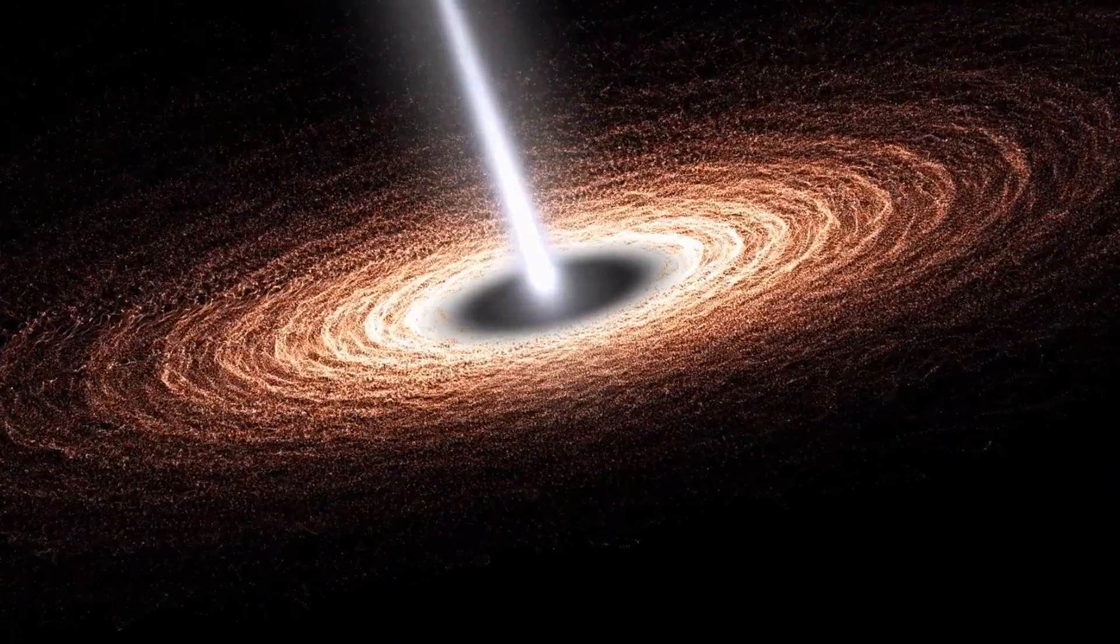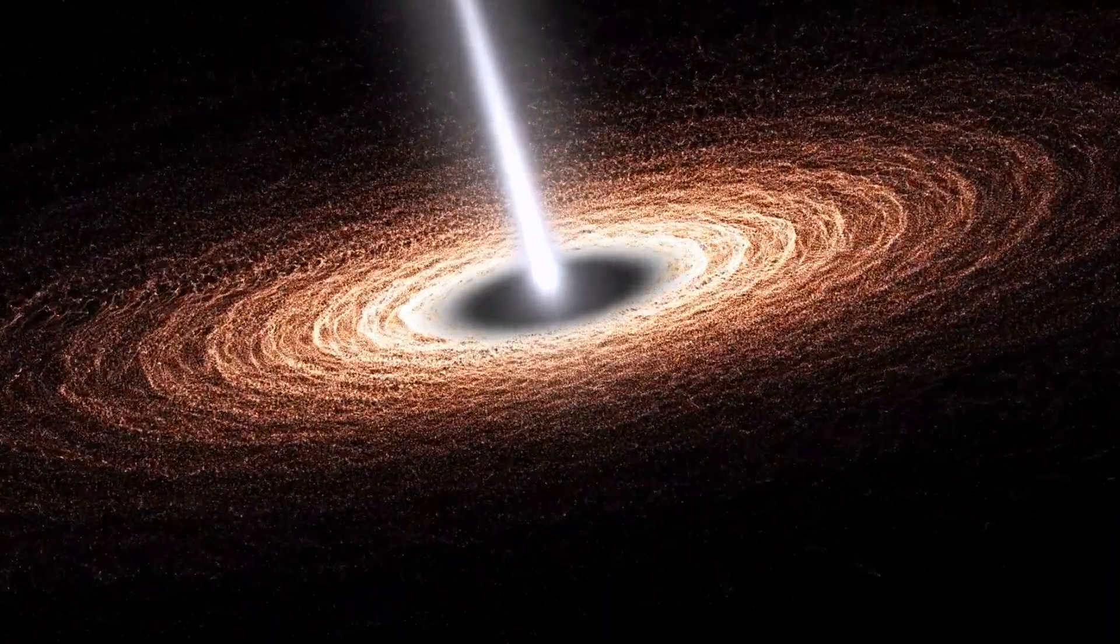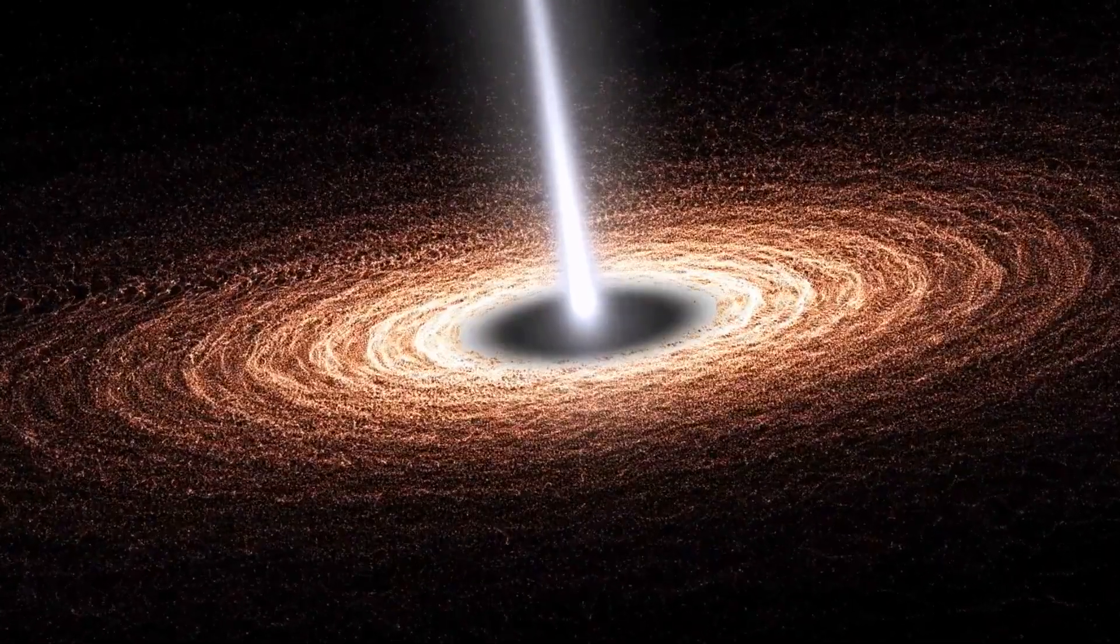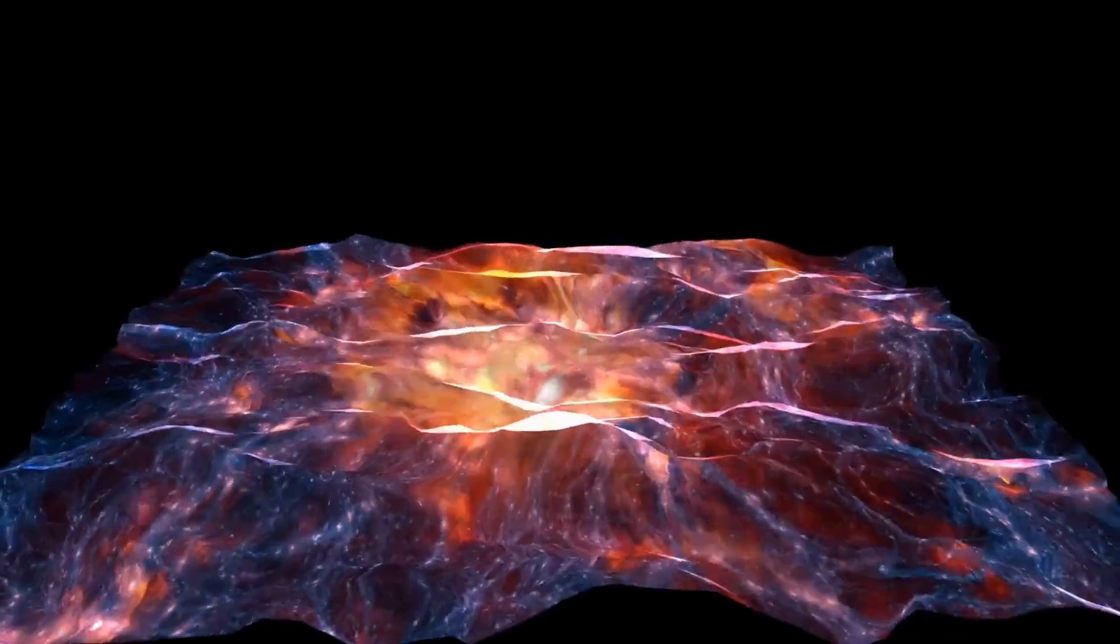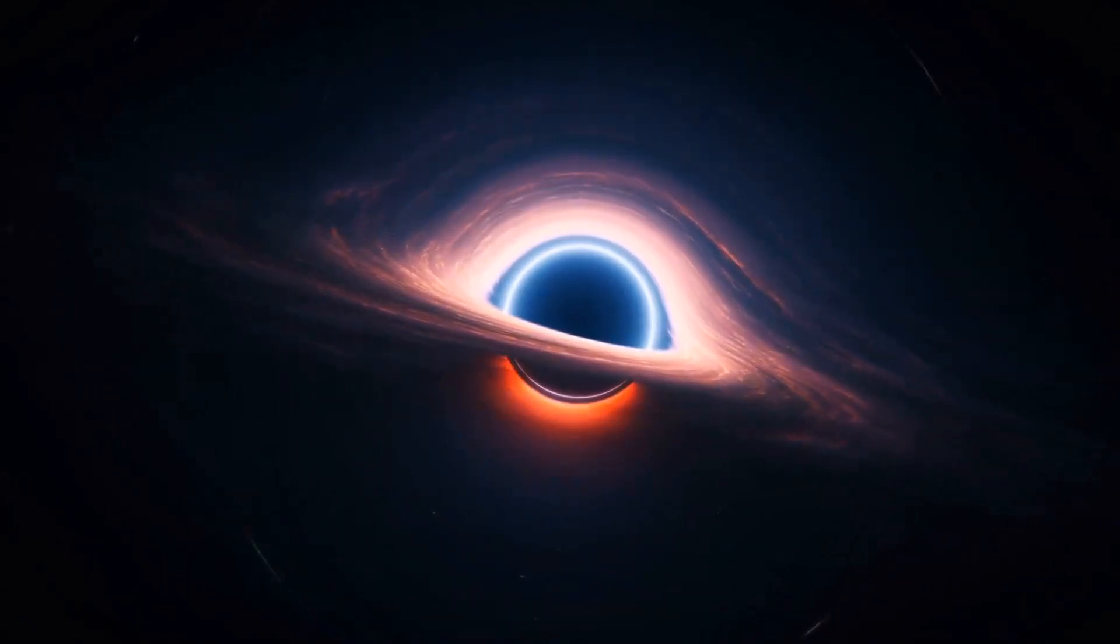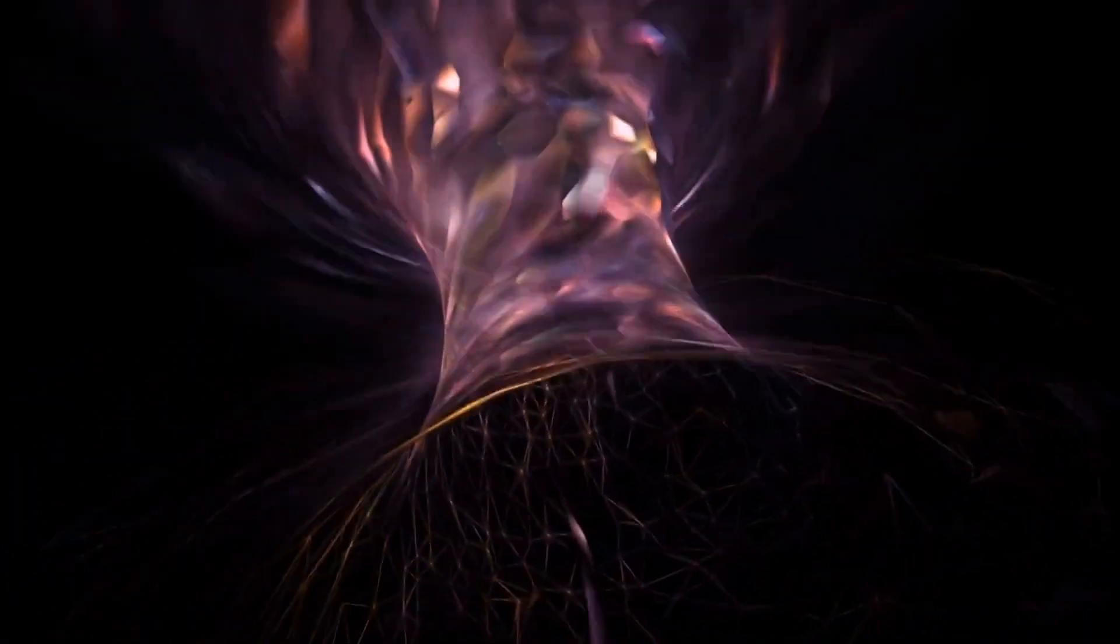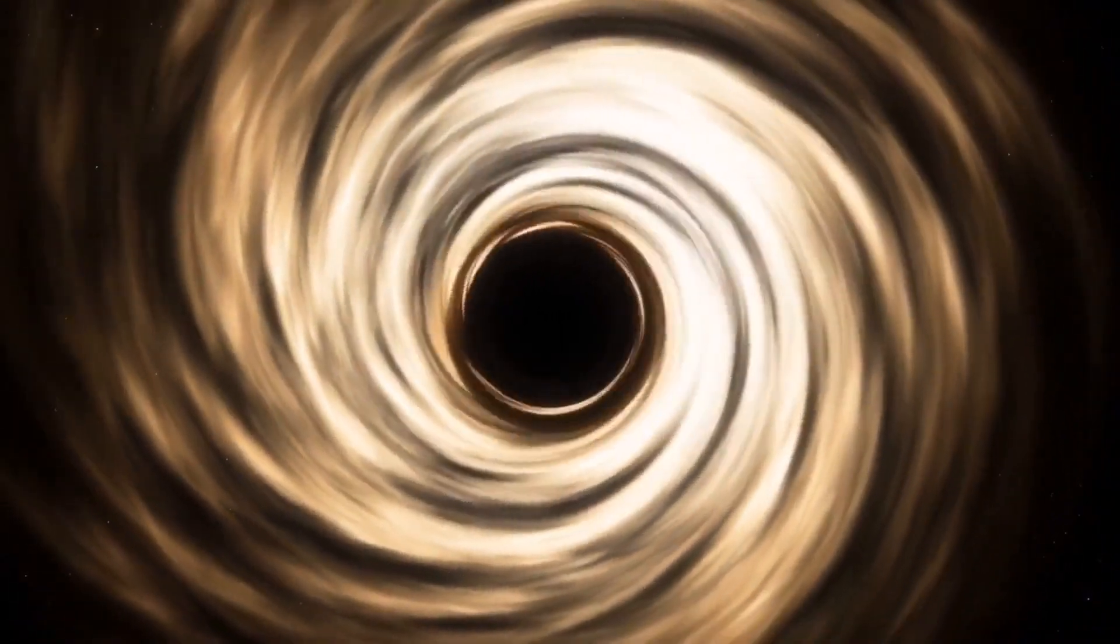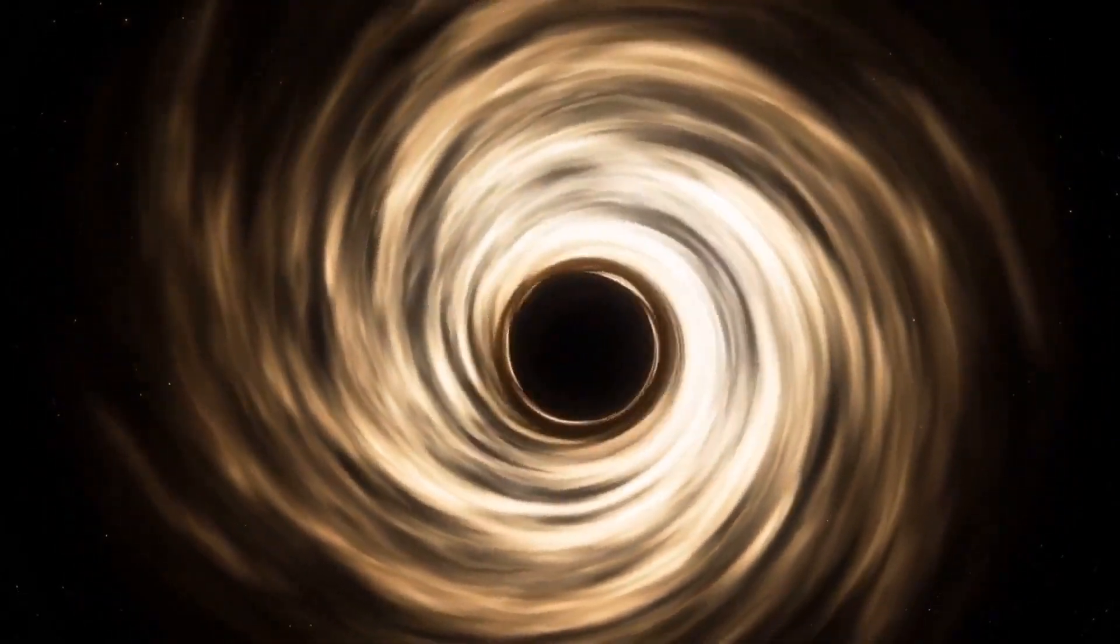But the surprises did not stop there. In the same year, scientists made an equally intriguing discovery: a black hole ejecting the remnants of a star it had consumed three years earlier. This unusual behavior shed new light on the enigmatic nature of black holes. Typically, black holes are thought to inexorably draw matter into their interiors, making this discovery a notable exception. The reason for this phenomenon is still under study, but it suggests that the interactions between black holes and surrounding matter are more complex than previously hypothesized. Observing this vomiting black hole adds another layer of mystery to the ongoing quest to fully understand the nature of black holes and their role in the universe.